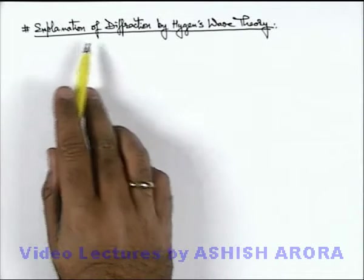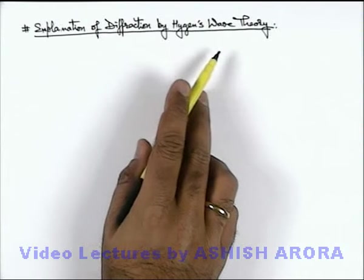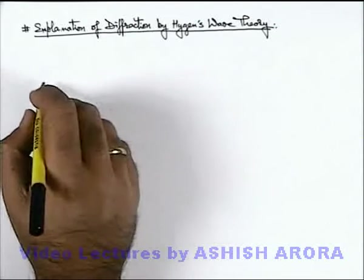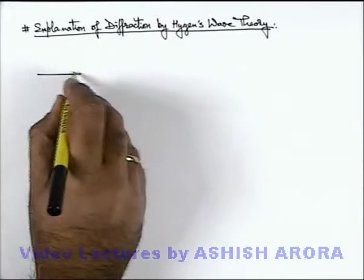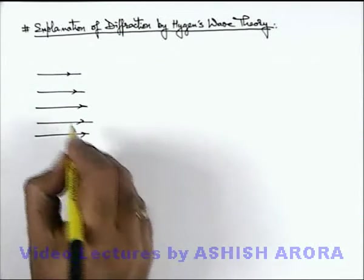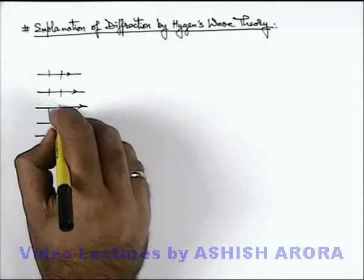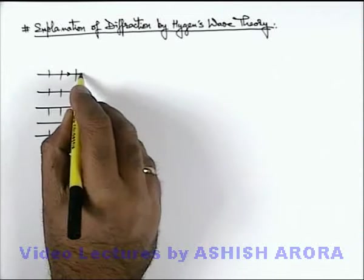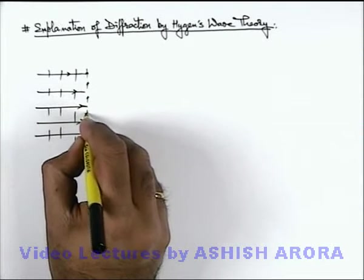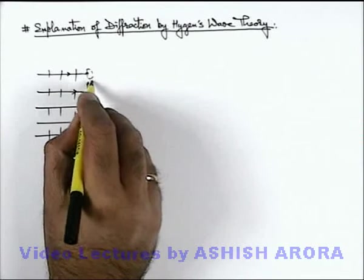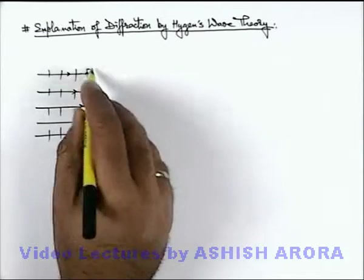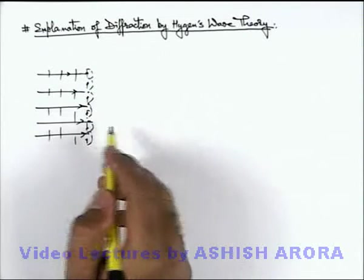Let us now discuss the explanation of diffraction by Huygens' wave theory. According to Huygens' wave theory, when a wave propagates, we consider that in the direction perpendicular to the propagation, plane wave fronts are propagating. On every wave front, different points are considered as secondary wavelets, which produce their own spherical wave front, tangent to which another wave front or next position of wave front is defined.